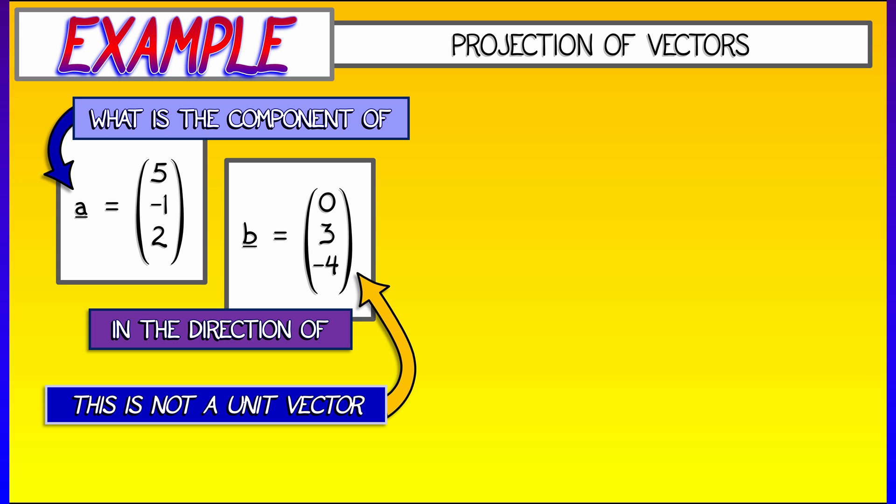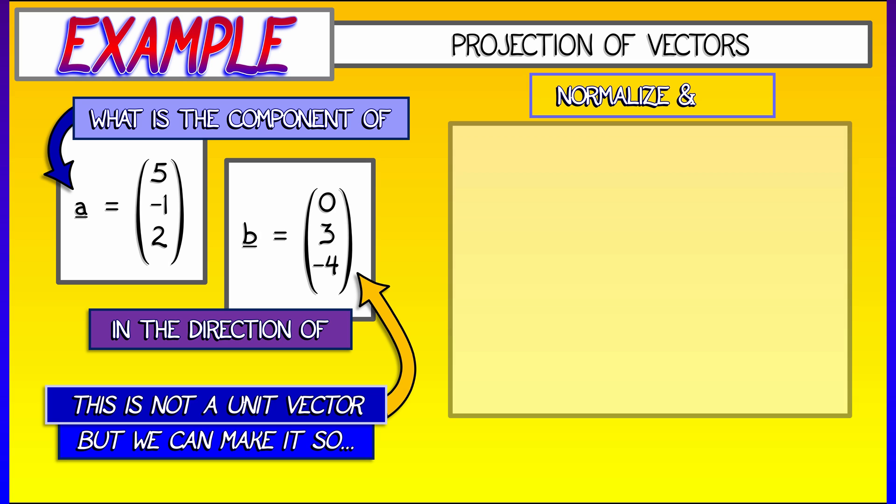Now note that b is not a unit vector. So we just can't take a dot b and boom, we're done. No, no, no. But we can make b a unit vector. And the simplest way to do that would be take that vector b and divide by its length so that the resultant is of unit length.